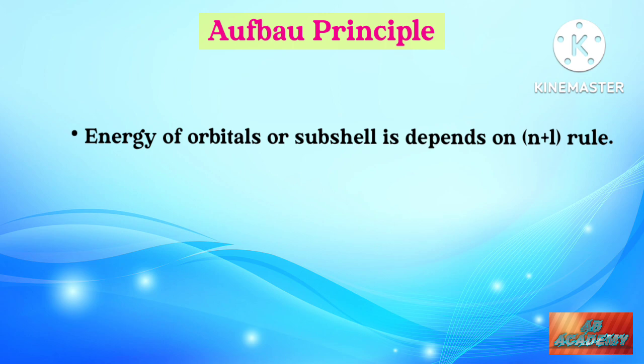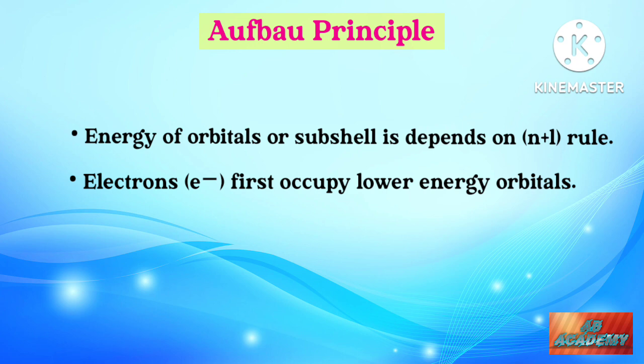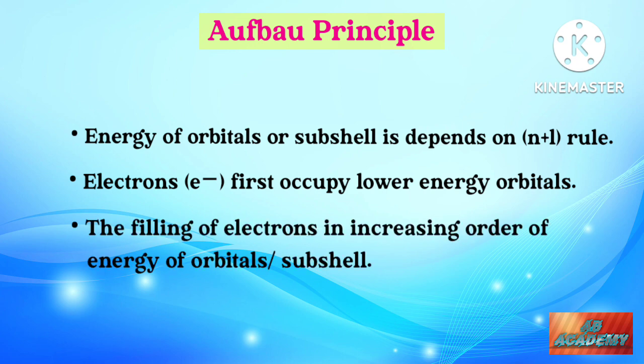The energy of orbitals or subshells depends on the n plus l rule. Electrons first occupy lower energy orbitals — this is the most important statement of the Aufbau principle. Everything in this world likes to exist at the lowest energy; this is a basic fundamental principle of physics. According to this, electrons are first filled in the lowest energy subshells or orbitals, then in higher energy orbitals, in increasing order of energy.